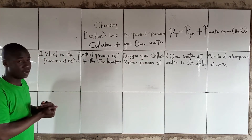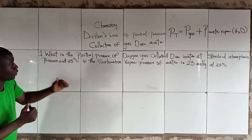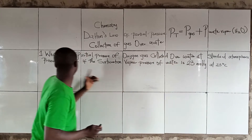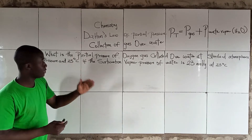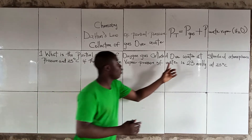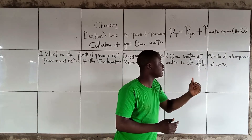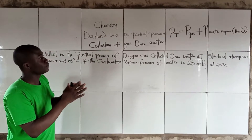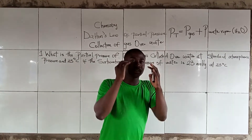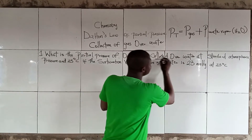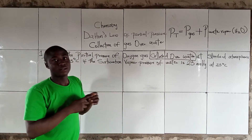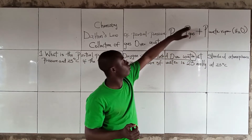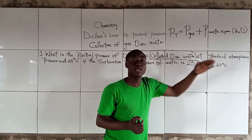Here is an example. The question asks: what is the partial pressure of oxygen gas collected over water at standard atmospheric pressure and 25 degrees Celsius, if the saturation vapor pressure of water is 23 mmHg at 25 degrees Celsius? When you see the statement 'collected over water', you know your formula should be Pt = P_gas + P_water_vapor.